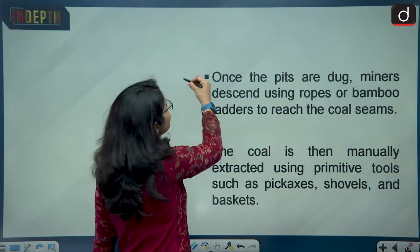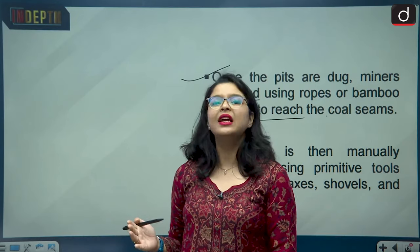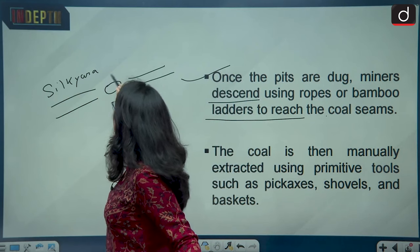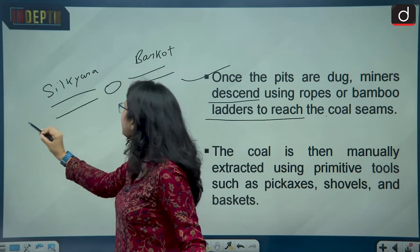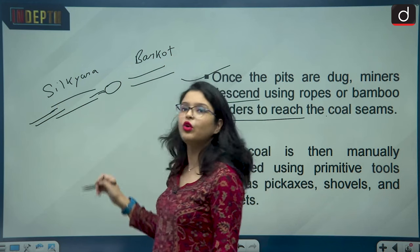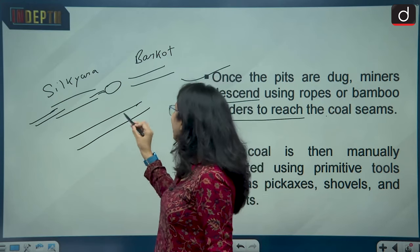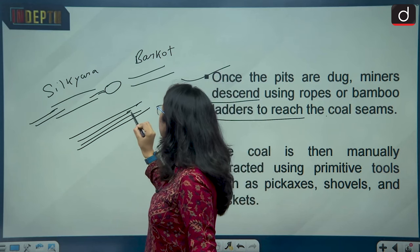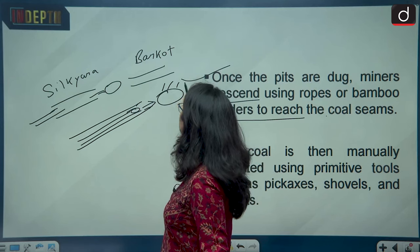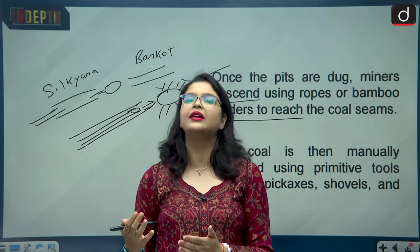Once the pits are dug, miners descend using ropes or bamboo ladders to reach the coal seams. In the Silkyara-Barkot tunnel rescue, what is being done is a vertical pit is being dug through the tunnel to reach the trapped workers. A pipe is inserted so that the workers can be taken out. A person sits inside the pit, loads the debris, and gives it to the person outside who uses tools to extract it, clearing the way for pipe insertion through which workers will be rescued.